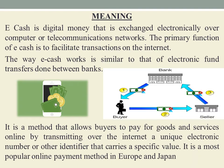eCash is a method that allows buyers to pay for goods and services online by transmitting over the internet a unique electronic number or other identifier that carries a specific value. Each e-coin has one ID number. It is a popular online payment method in Europe and Japan.